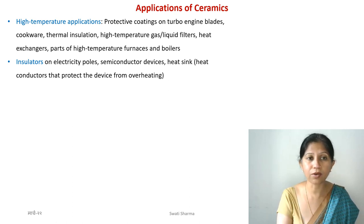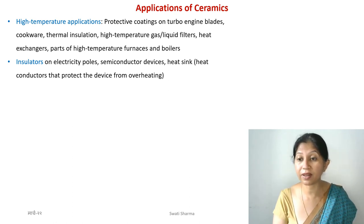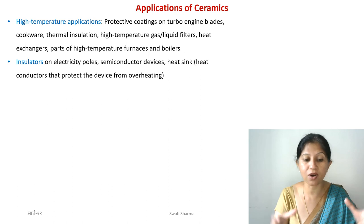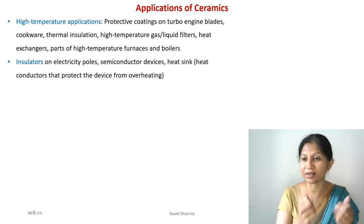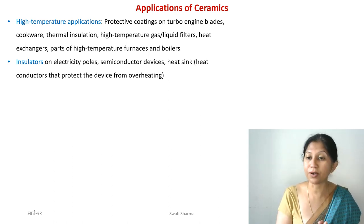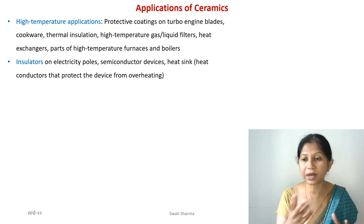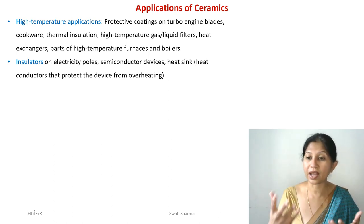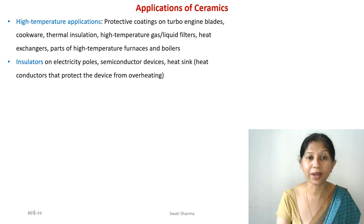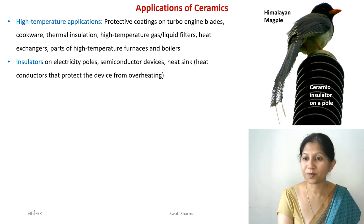High-temperature furnaces also use ceramics. If you have a furnace that needs to reach 2000 degrees centigrade, the parts of that furnace — where you place your sample — must not melt themselves. The sample holders and tubes are made of ceramic, typically alumina up to 1600 degrees centigrade. For even higher temperatures, more advanced ceramic materials are used.